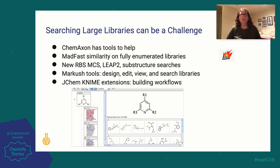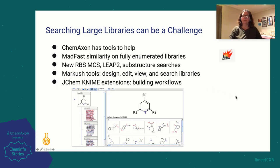To sum up: searching large libraries can be a technical challenge and ChemAxon has a lot of tools that can help. We can do MadFast similarity on fully enumerated libraries, we have new rule-based search tools for similarity and substructure searches in Markush space, we have our Markush tools with lots of ways to design, edit, view, and search libraries. I'm showing a screenshot from Markush Editor with a DNA encoded library example, and the JChem extensions — I relied on those to build some of these workflows — can be very useful as well.